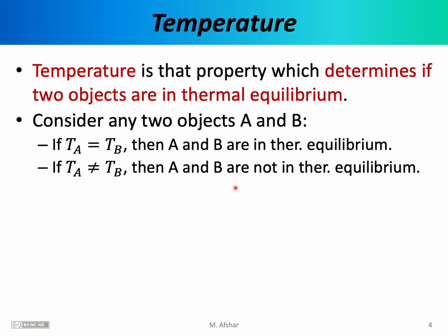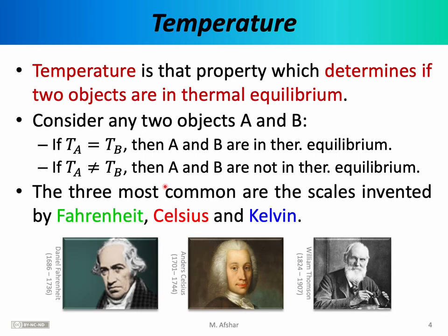It turns out there are many choices for the reference object and many ways to assign numbers to different states of the thermometer — these choices are not at all unique. But the three most common choices are the scales invented by Fahrenheit, Celsius, and Kelvin. In this class, we're primarily interested in the Kelvin temperature scale, but we also need to know about the Fahrenheit and Celsius temperature scales.